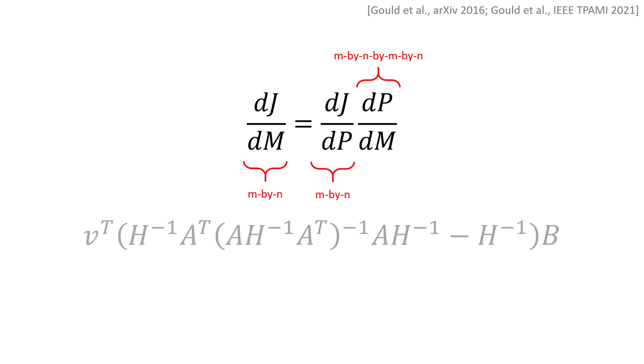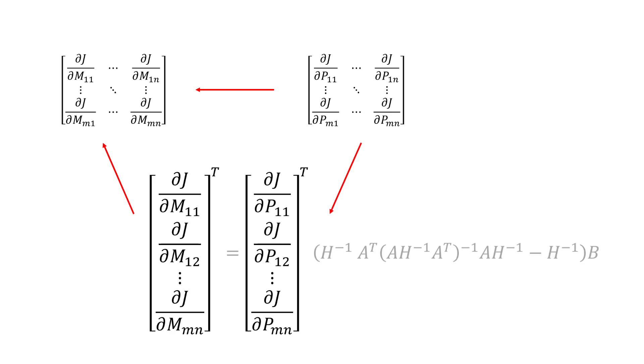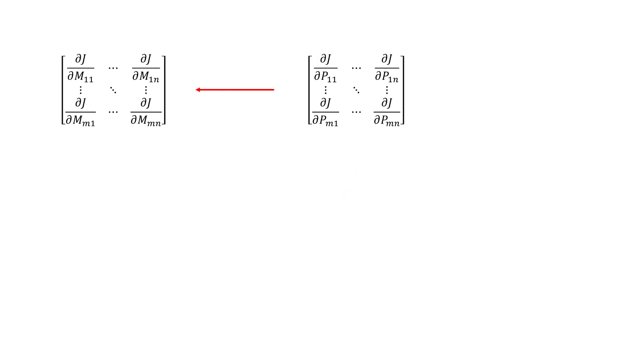This makes dP/dM a four-dimensional tensor. To apply the deep declarative network result, we need to conceptually vectorize the inputs and outputs. You can think of this as flattening the data matrices row-wise to produce a vector of length Mn, as illustrated here. As we will see later, this is only for thinking through the mathematical operations. In the actual implementation, we can leave the inputs and outputs in their native matrix or tensor forms.